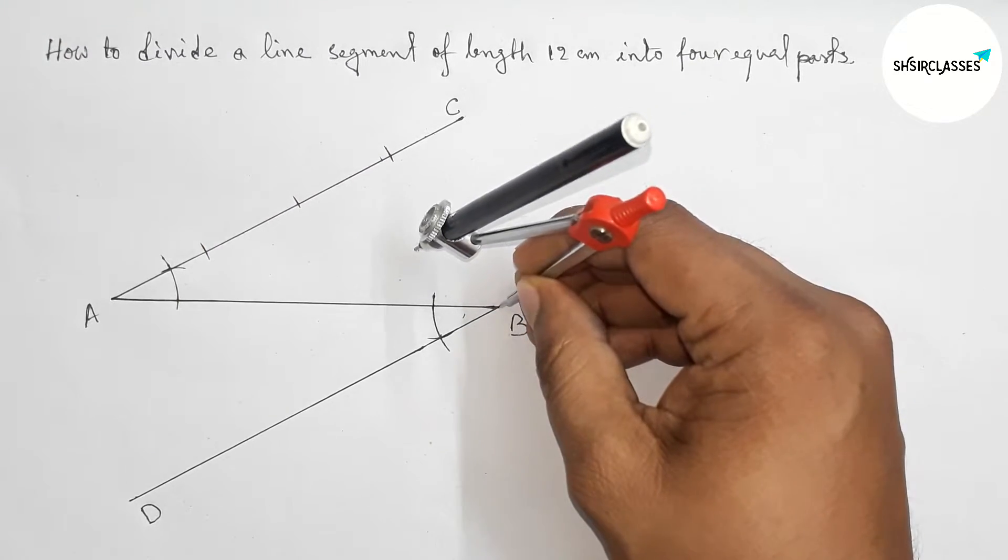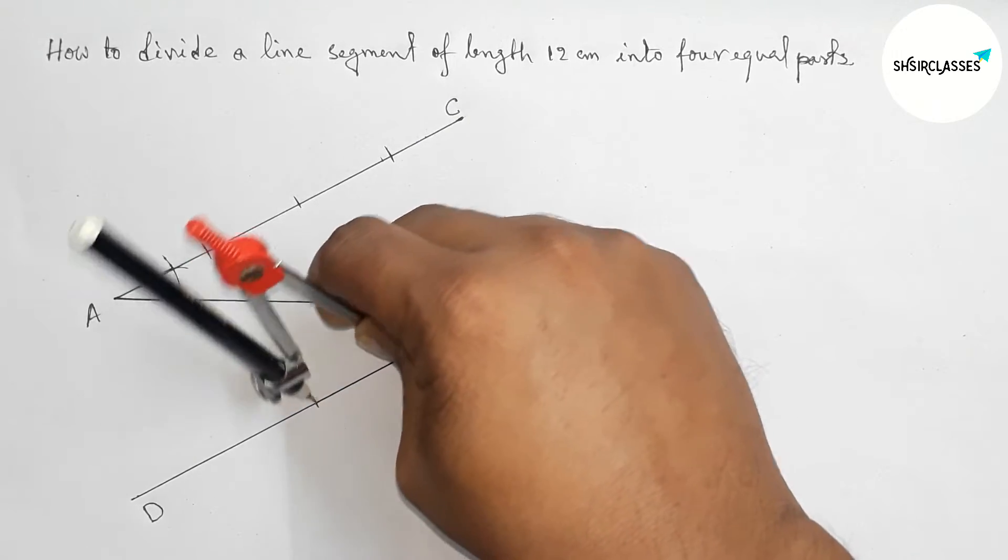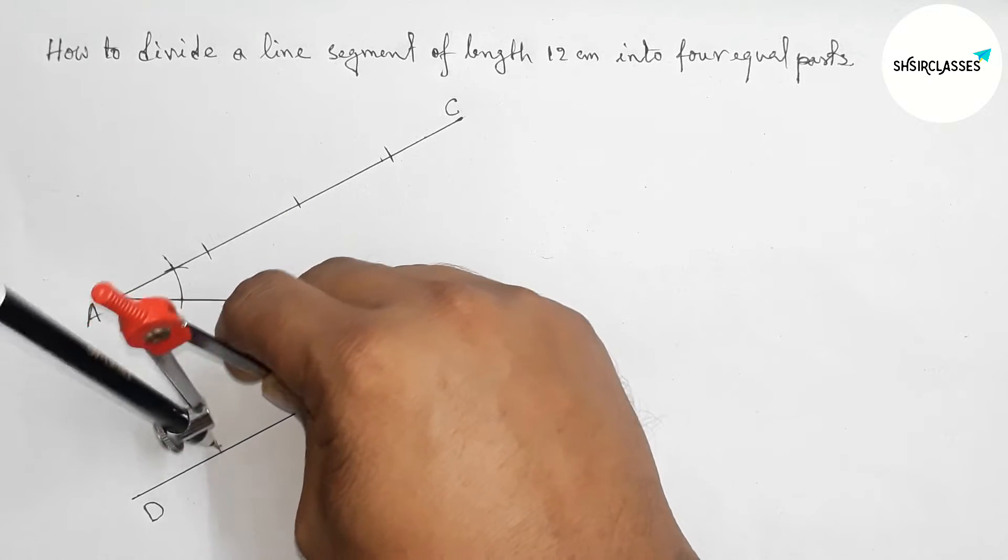Similarly cut the line BD with same length into three parts.